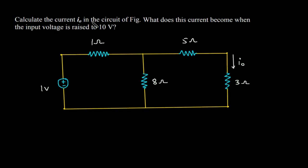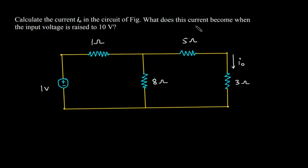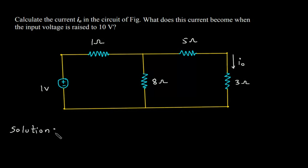Calculate the current I.O in the circuit of figure. What does this current become when the input voltage is raised to 10V? Solution. First of all, we will redraw the circuit.